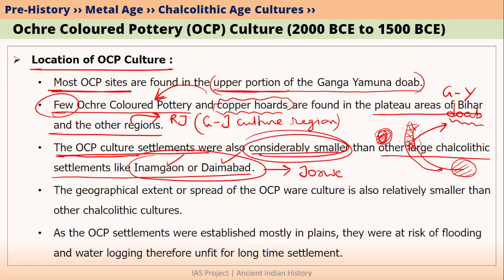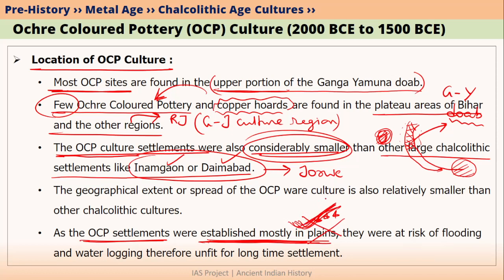These were small because they were mostly located in the plains. This is very important because it is a contradicting nature — Chalcolithic settlements are generally not available in plains, however OCP settlements were mostly established in plains. That is why it is a very important observation.